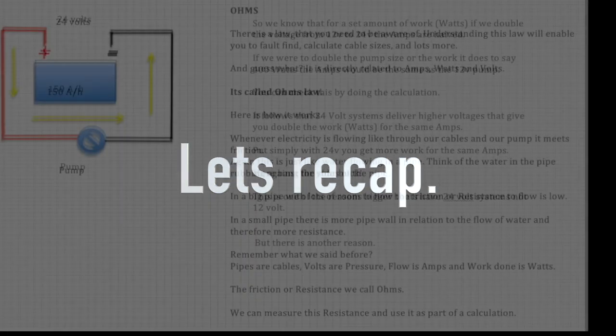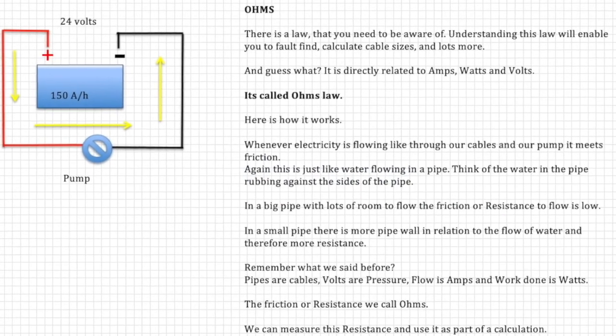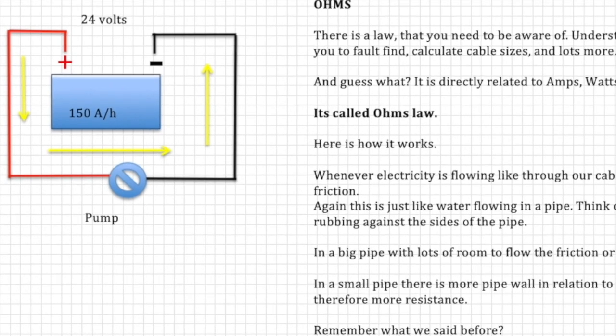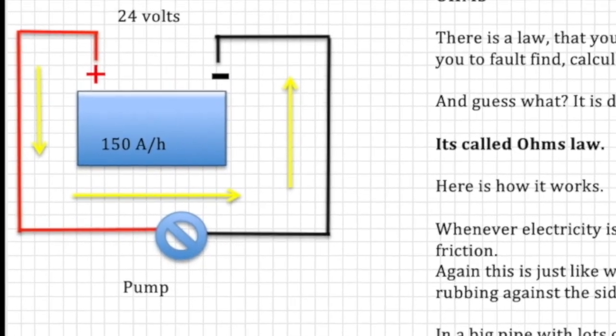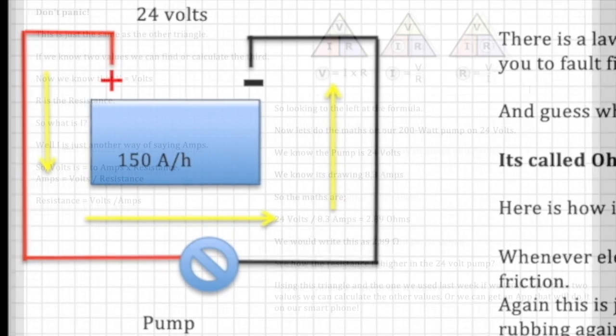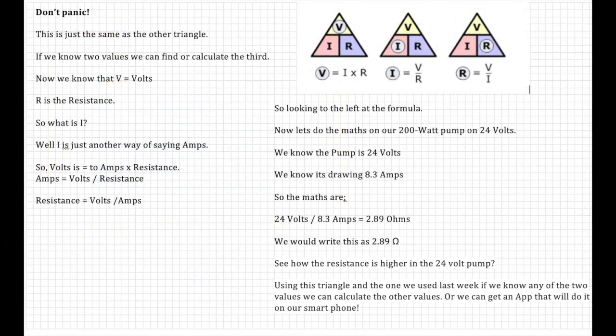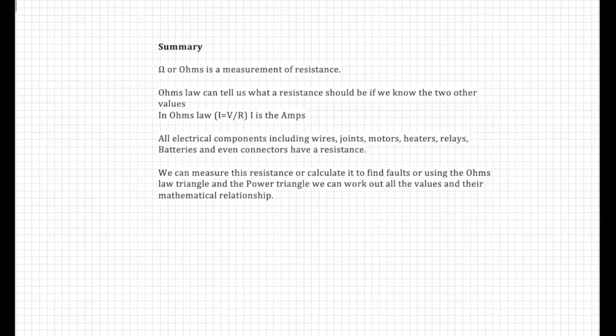Let's recap on what we learned in the last two videos. We learned that voltage is pressure, amps are flow, and watts are work done. We learned that electricity flows in circuits from positive to negative and that there's resistance in all circuits. We also learned that higher voltages are more efficient than lower voltages. We also learned about Ohm's law and how to do Ohm's law calculations. I equals V over R. Ohms is a measurement of resistance.